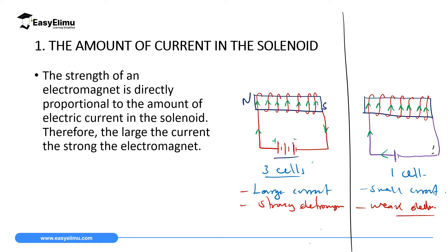Keeping the number of turns constant and the resistance of the wire constant, you only change the number of cells. If we increase them from one to three, the electromagnet will become strong. The nature of the material will be the same — we will use soft iron of the same length. Number of turns should be constant. If we change the number of cells from three to one, the electromagnet will become weak. Increase from one to three, the electromagnet becomes very strong.